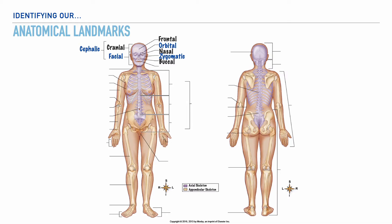Next is the buccal area, which represents the lower cheek, and lastly the oral region, which represents the mouth. Shifting to the other side of the image, the supraclavicular region simply represents the area that is above the clavicle. The prefix supra — S-U-P-R-A — means above, and clavicular refers to the clavicle, or what you may commonly call the collarbone.